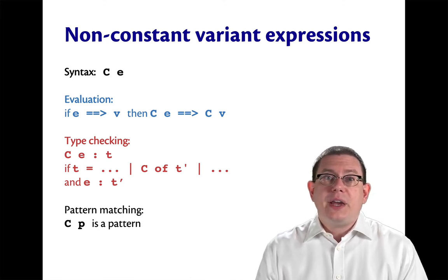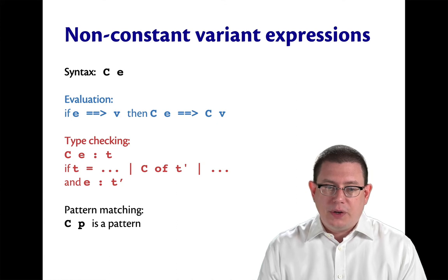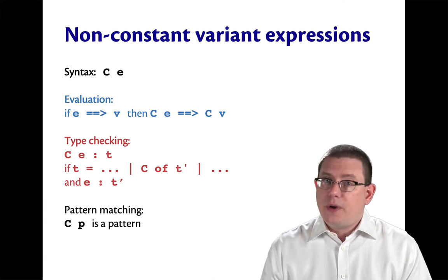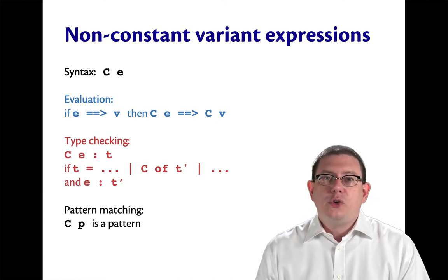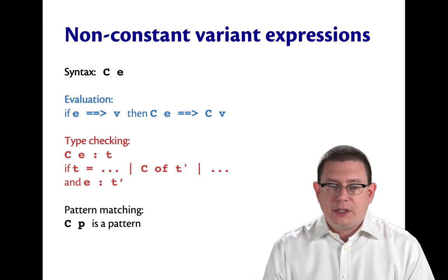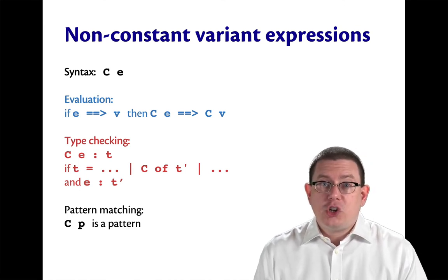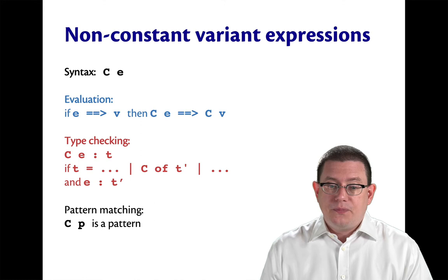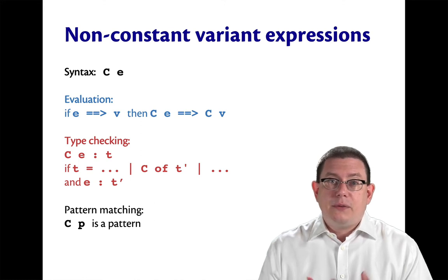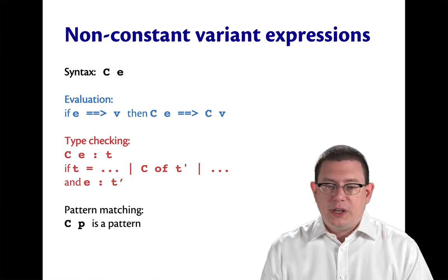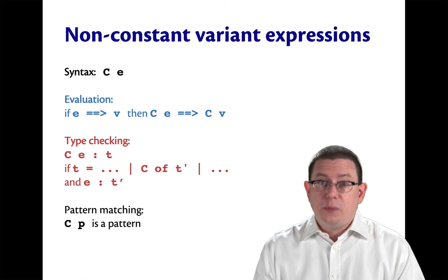So the syntax for a non-constant variant expression is the name of the constructor followed by an expression. To evaluate a non-constant variant expression, evaluate the expression E inside of it to a value. And then the result of the entire expression is just the constructor name followed by that value.